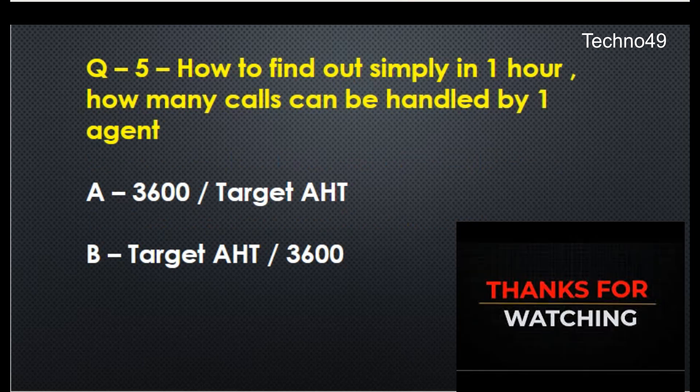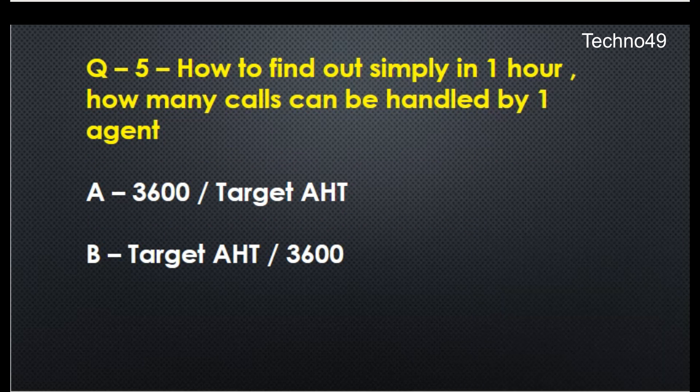Question five: how do you find out how many calls one agent can handle in one hour? The correct answer is 3600 divided by target AHT — 3600 being the number of seconds in one hour. I hope you liked this video. Please subscribe, share, and mention any questions in the comment section. Thank you so much for watching.